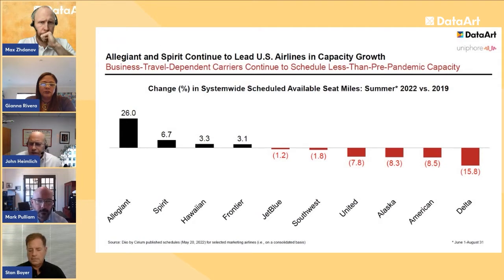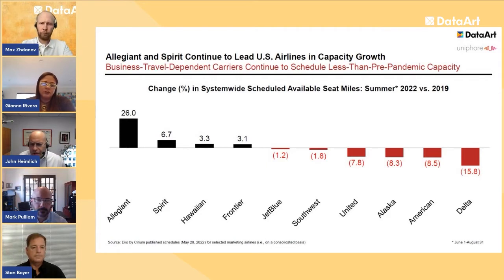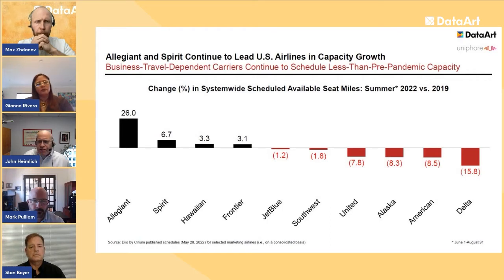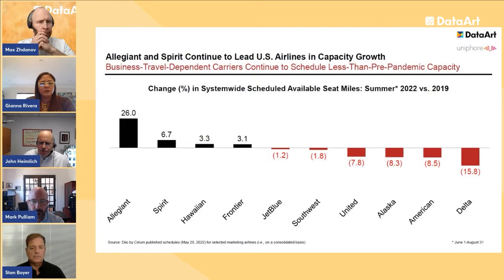In terms of who is growing among U.S. carriers, looking at the 10 largest brands, it's still Allegiant and Spirit — the ultra low cost carriers — growing the fastest. Hawaiian shows some growth as well. This is defined as June 1st through August 31st relative to that same period in 2019. Airlines most dependent on corporate or Pacific traffic — United, Alaska, American, Delta — show the smallest capacity footprint. JetBlue and Southwest are down just one to two percent.